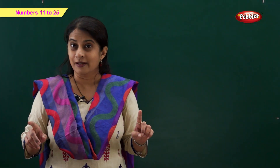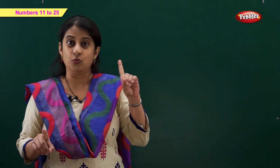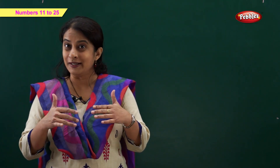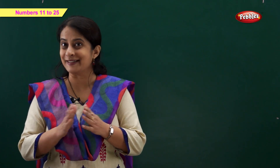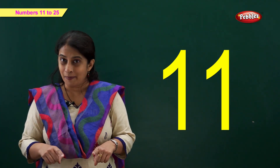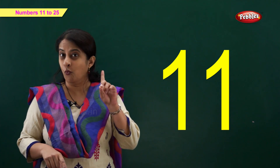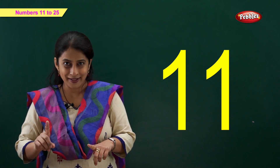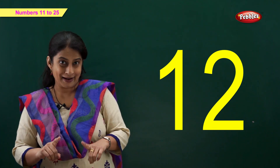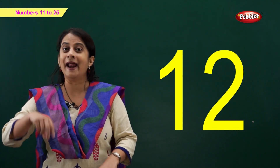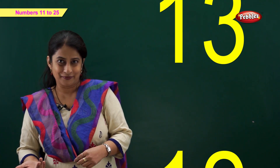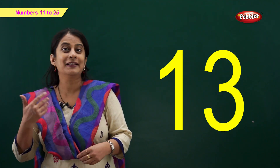Friends, we have learned numbers 1 to 10 and now it's time to learn some more numbers. So let's get started! Number 11: 1 and 1 is 11. Number 12: 1 and 2 is 12. Now number 13.